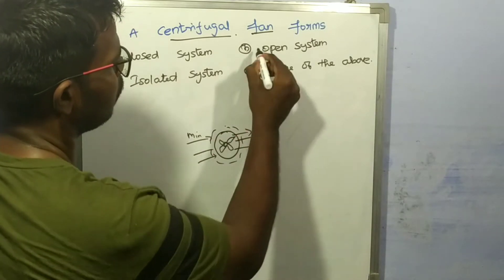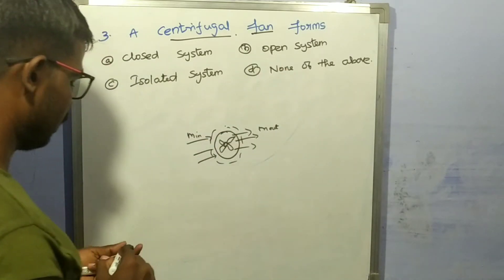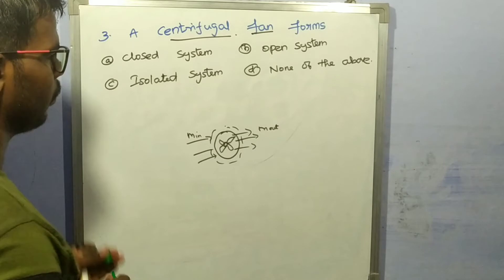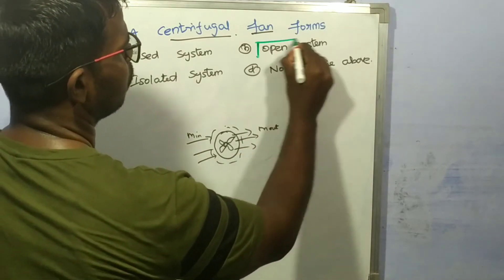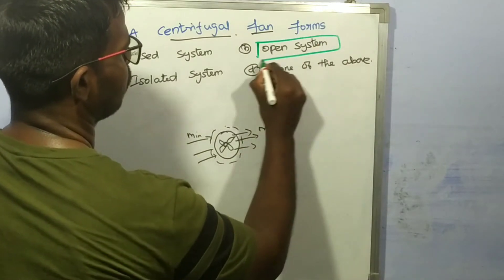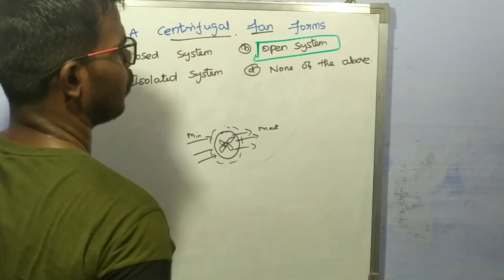For a centrifugal fan, there is mass transfer across the boundary of the system. Hence it is an open system. Option B is correct — open system.